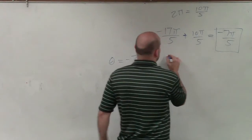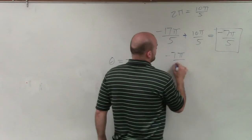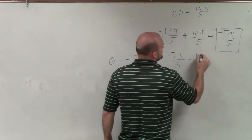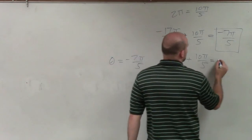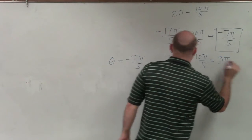So therefore, if I take negative 7 pi over 5 and add 10 pi over 5 again, which is just like adding 2 pi, I now get my smallest positive coterminal angle.